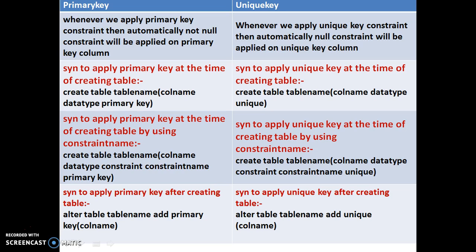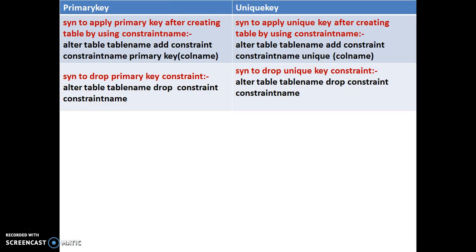Syntax to apply primary key constraint at table creation: CREATE TABLE table_name (column_name data_type PRIMARY KEY). Unique key syntax: CREATE TABLE table_name (column_name data_type UNIQUE). With constraint name: CREATE TABLE table_name (column_name data_type CONSTRAINT constraint_name PRIMARY KEY) or CONSTRAINT constraint_name UNIQUE. After table creation: ALTER TABLE table_name ADD PRIMARY KEY (column_name) or ADD UNIQUE (column_name). With constraint name: ALTER TABLE table_name ADD CONSTRAINT constraint_name PRIMARY KEY (column_name) or CONSTRAINT constraint_name UNIQUE (column_name).